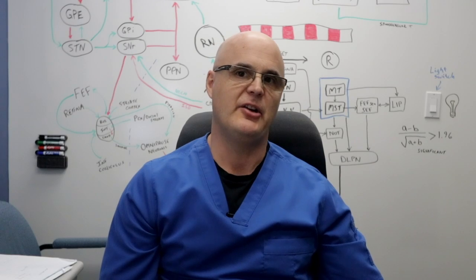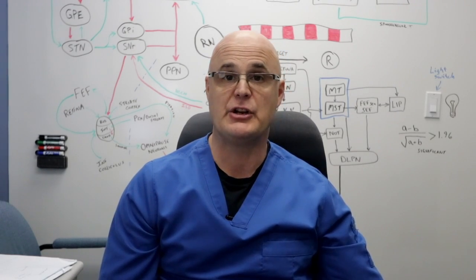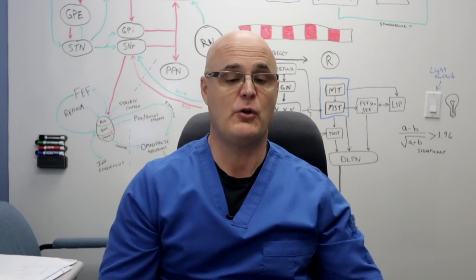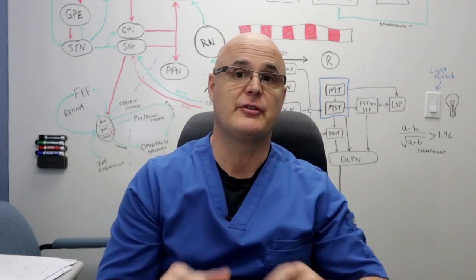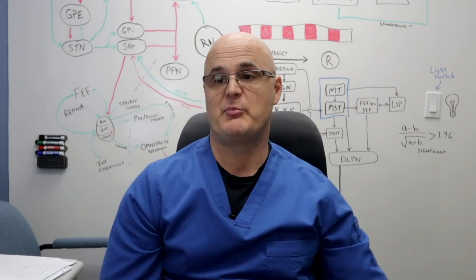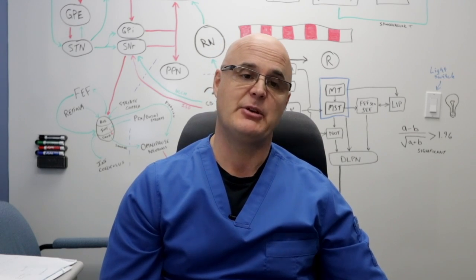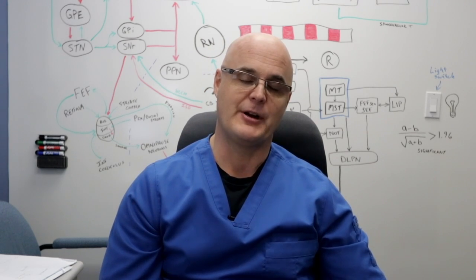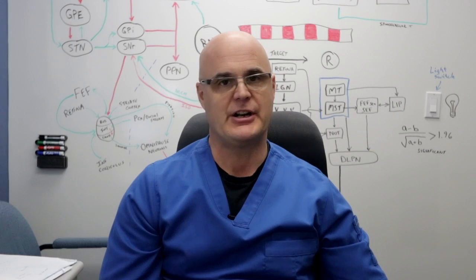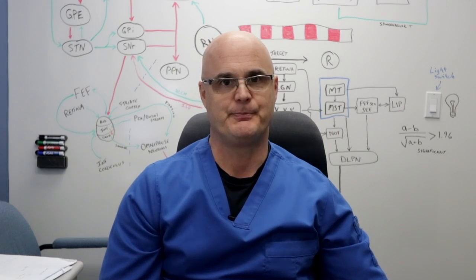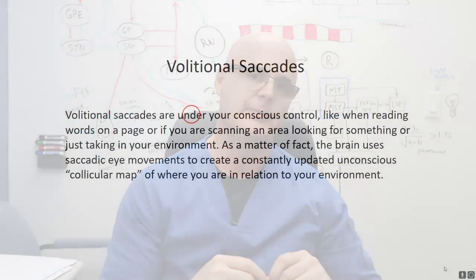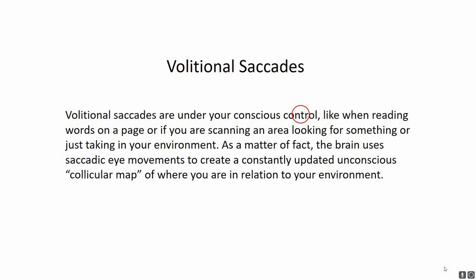That means a healthy brain can choose to ignore something new in the periphery and maintain focus on something else in front of them. This concept of being able to inhibit reflexive eye movements is important and we're going to come back to it later in another video. Volitional saccades are under your conscious control, like when you're reading words on a page, scanning an area looking for something, or just taking in your environment.